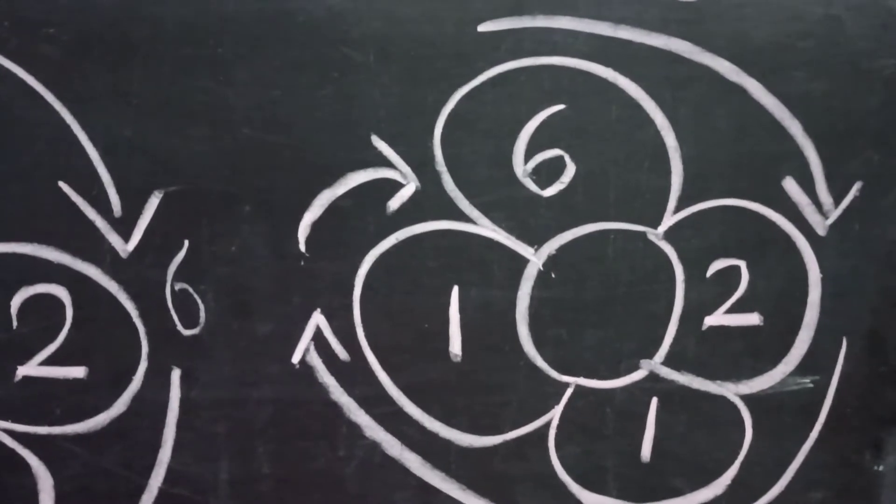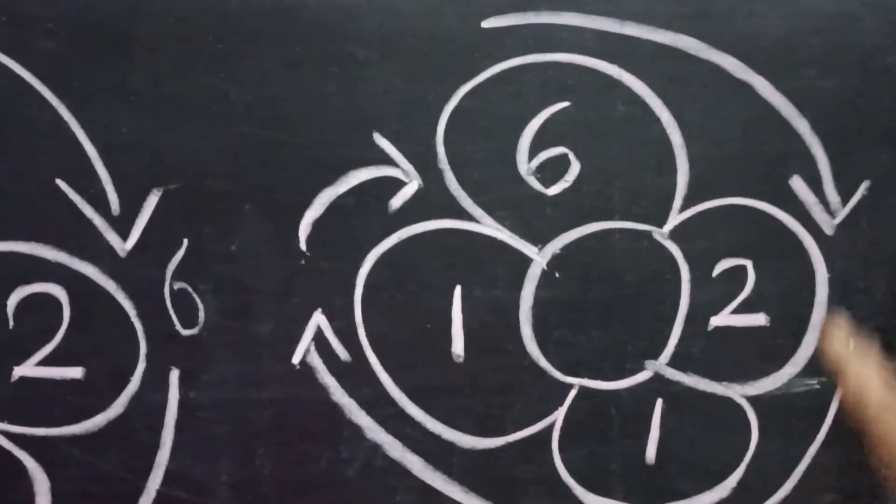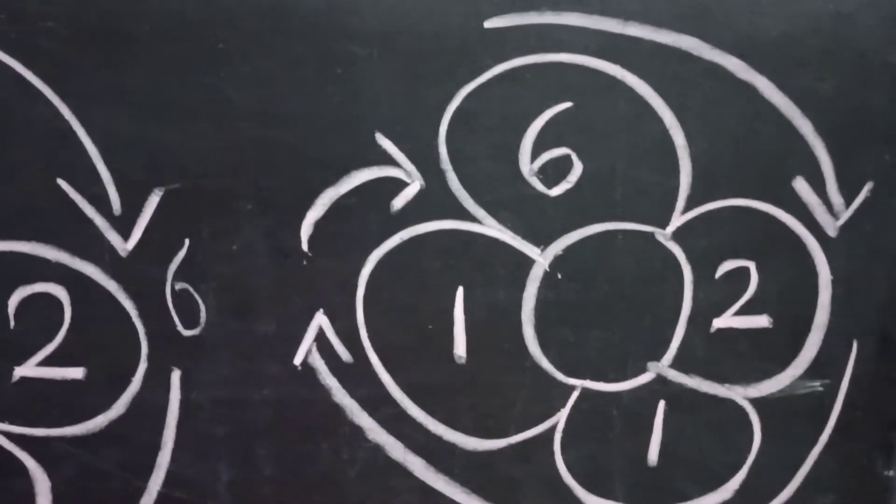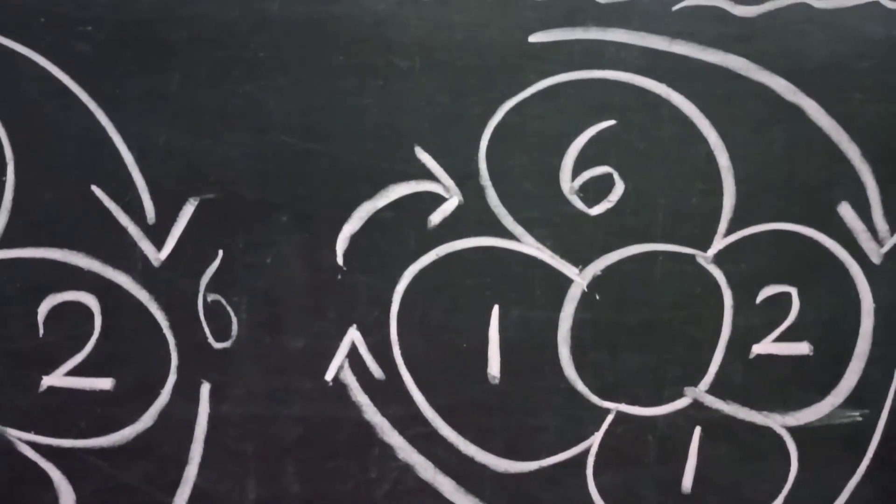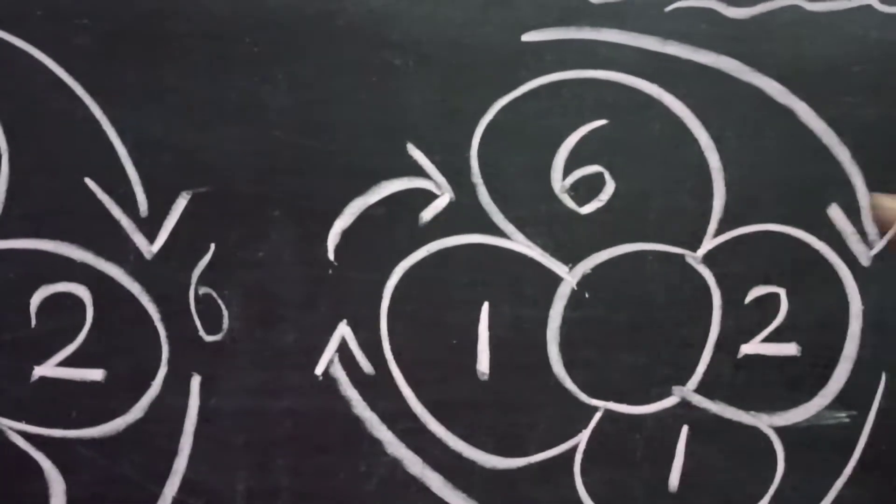Let us see another example. So here we have got four numbers in the petals. Again, with the same procedure. The first petal consists of six. Six in the mind.